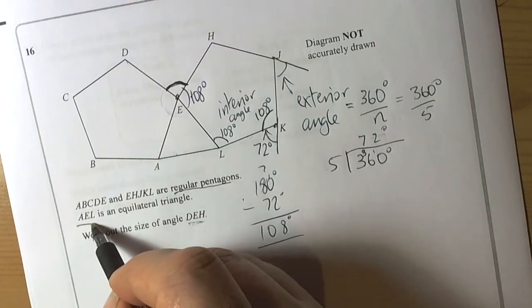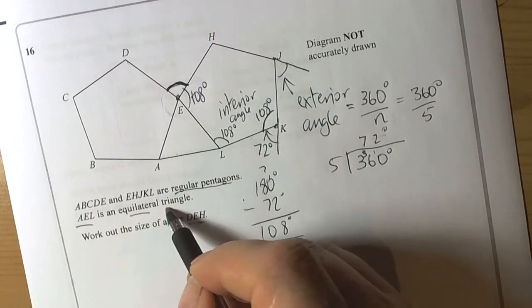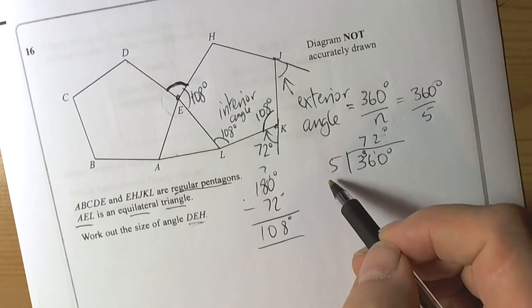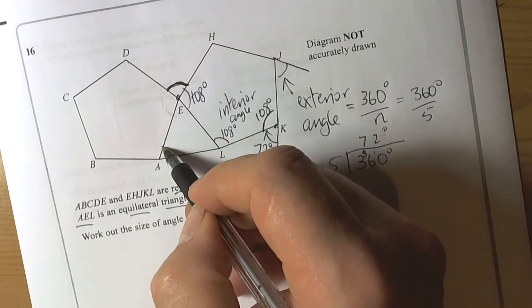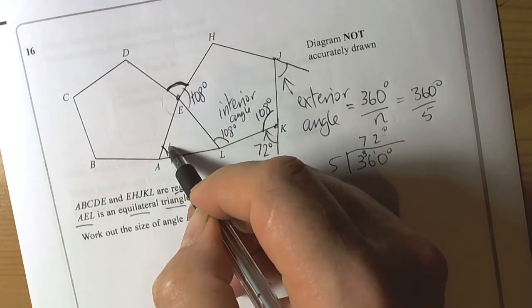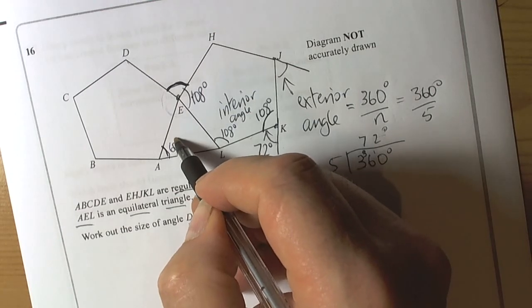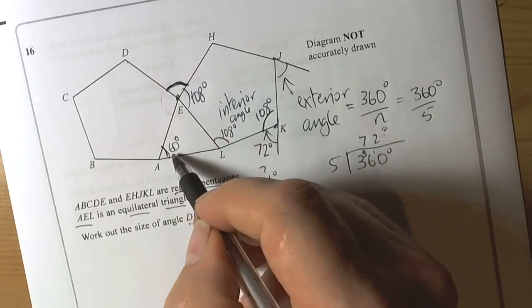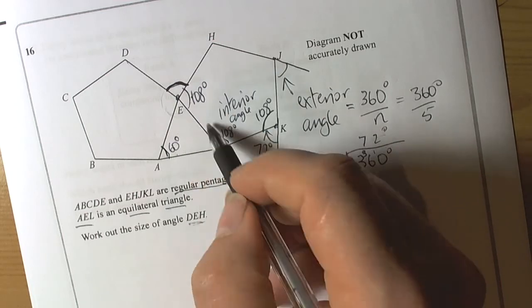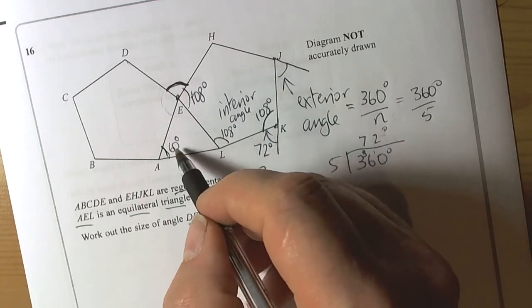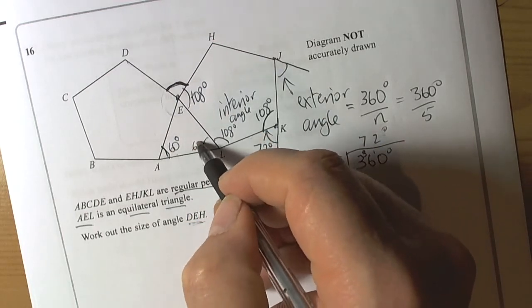They've told us in this question that AEL is an equilateral triangle. We should remember that equilateral means everything is the same. So all the lengths are the same length, and all the angles inside are the same. We know the angles in a triangle add up to 180, and 180 divided by 3 is 60. So every one of these angles is 60 degrees.